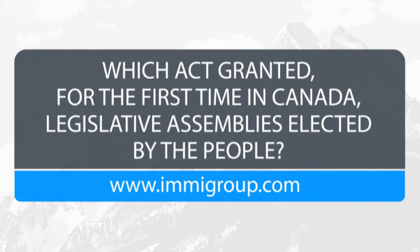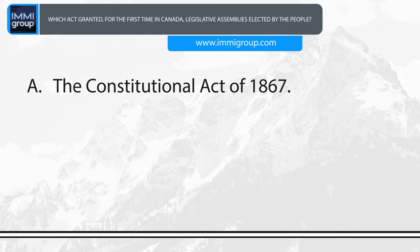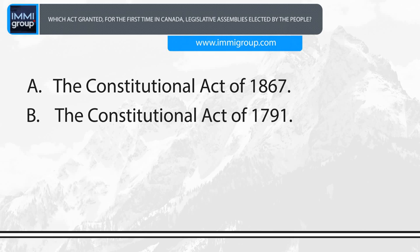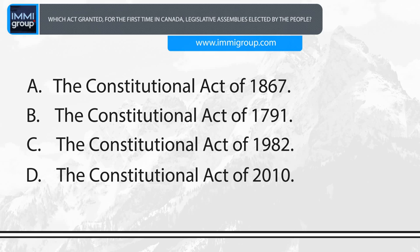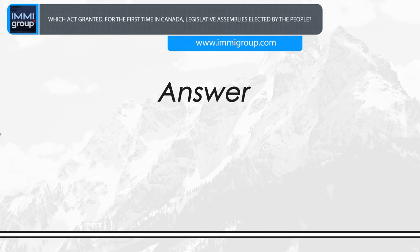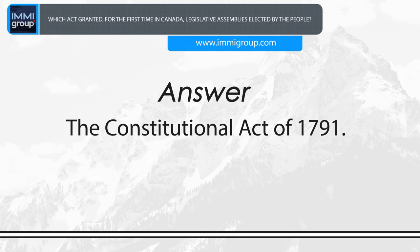Which Act granted for the first time in Canada legislative assemblies elected by the people? A. The Constitutional Act of 1867. B. The Constitutional Act of 1791. C. The Constitutional Act of 1982. D. The Constitutional Act of 1792. Answer: The Constitutional Act of 1791.